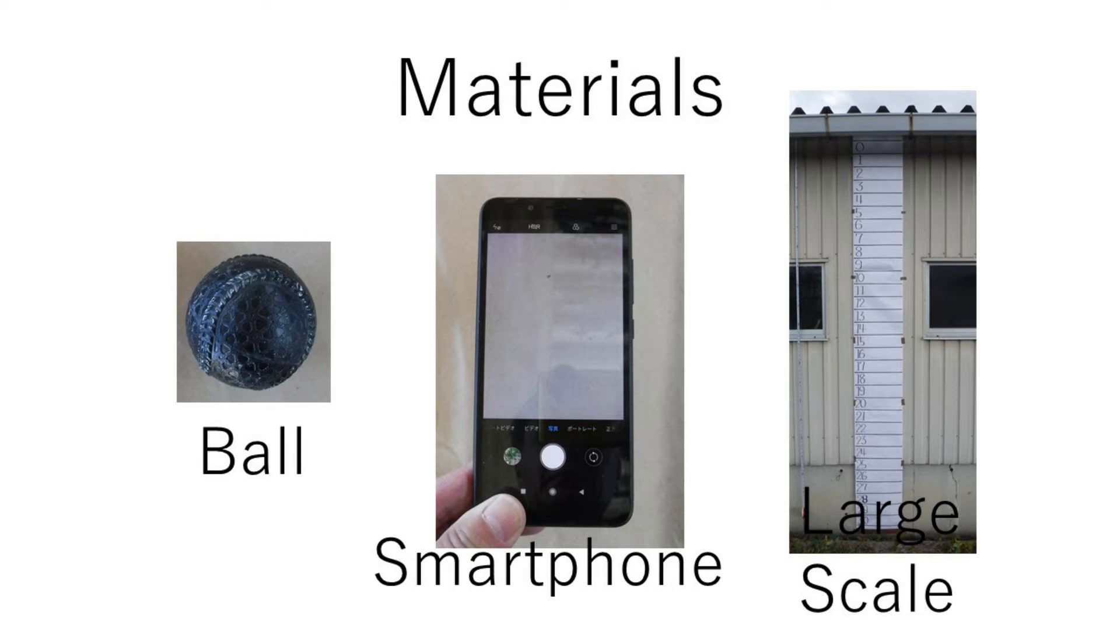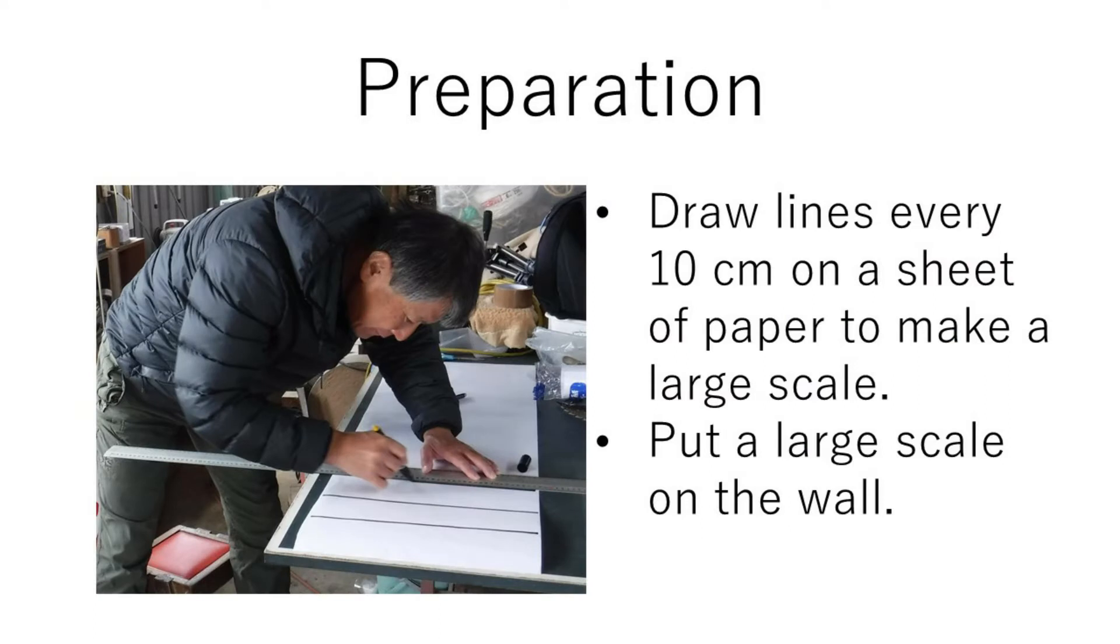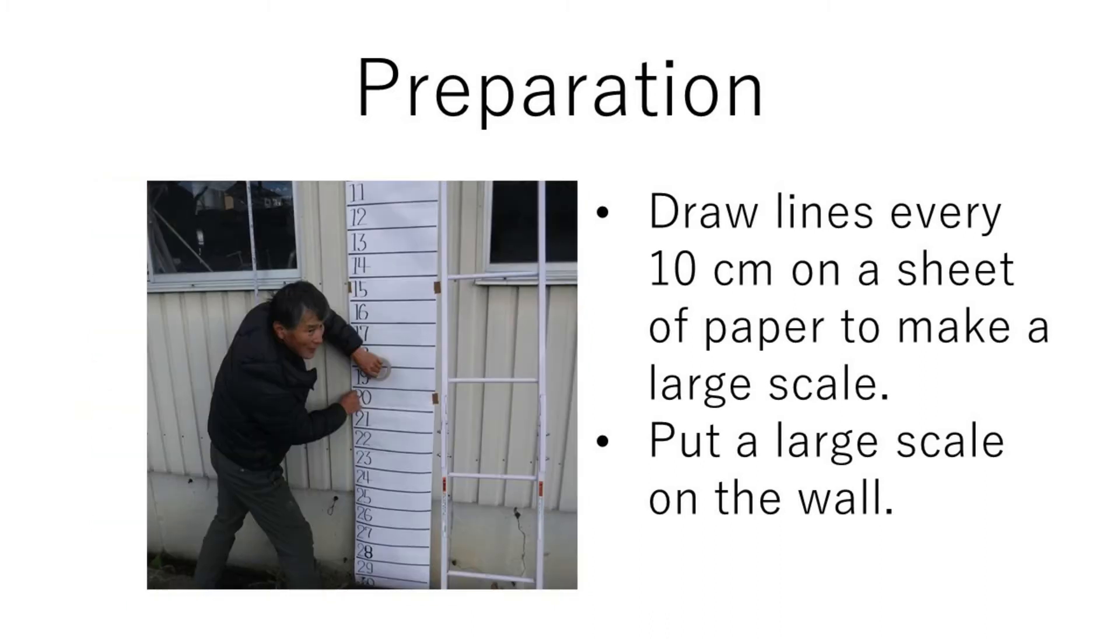Materials are ball, a smartphone and a large scale. Make a large scale for measurement. Draw a line every 10cm on the paper. Put this scale on the wall of the measurement press.